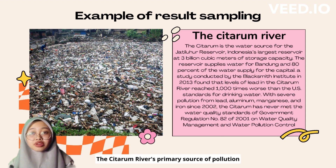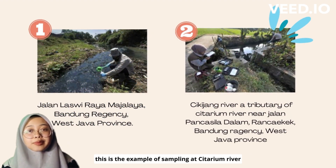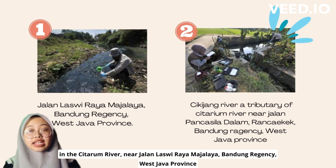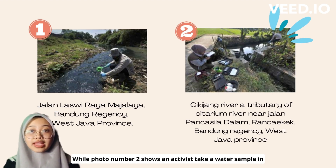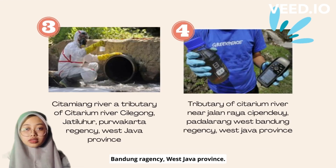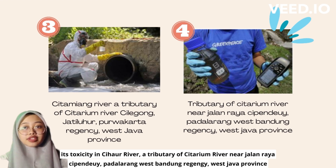The Citarum River's primary sources of pollution are domestic waste and household wastewater and garbage, industrial waste, livestock waste, and fishery waste. This is the example of sampling at the Citarum River. Photo 1 shows an activity collecting a water sample to test its toxicity near Jalan Laswi Raja Majalaya, Bandung Regency, West Java Province. Photo 2 shows a similar activity near Jalan Panjang Singalaya, Bandung Regency, West Java Province. Photo 3 shows a water sample collected for toxicity testing near Jalan Raja Majalaya, Bandung Regency, West Java Province.